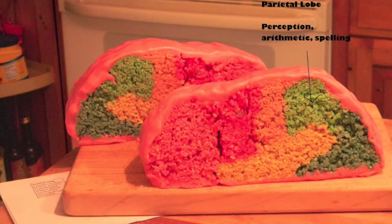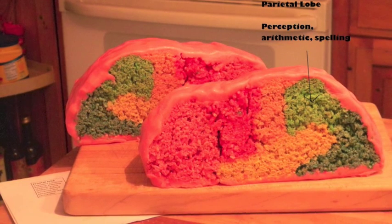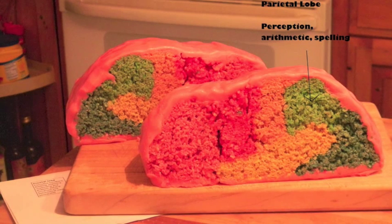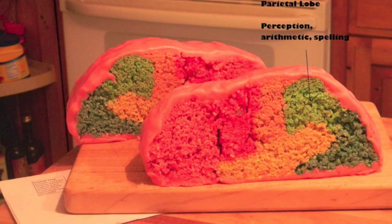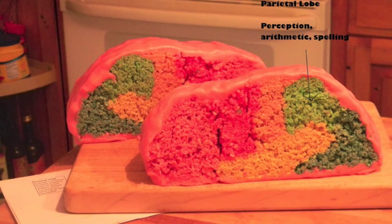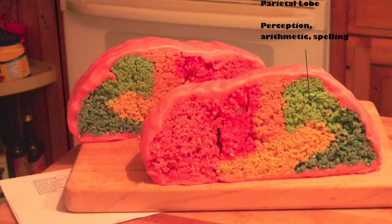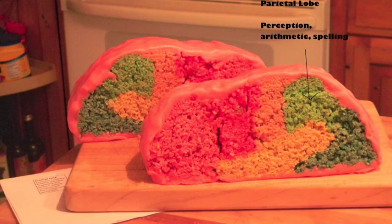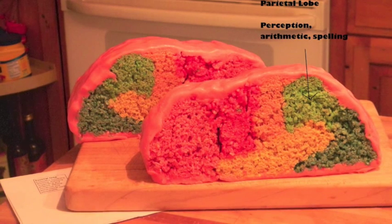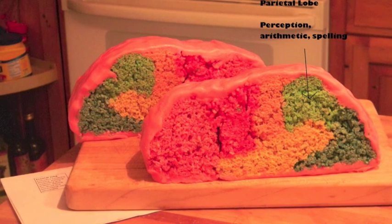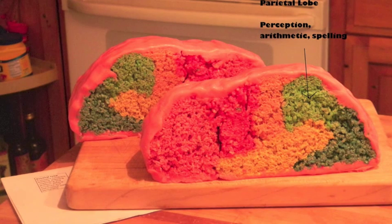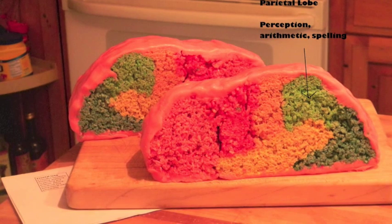Parietal lobes. The parietal lobes are located behind the frontal lobe but still on top of the brain. The parietal lobes contain the sensory cortex, which is located right behind the motor cortex in the frontal lobe. The sensory cortex is a thin vertical strip that receives incoming touch sensations from the rest of our body. The top of the sensory cortex receives sensations from the bottom of the body, processing down the cortex to the bottom, which processes signals from our face and head.